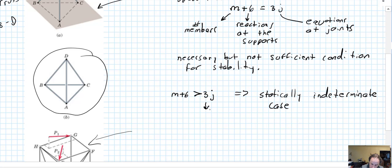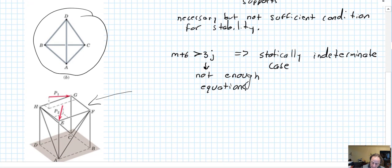Not enough equations to solve for all the unknowns. Alternatively, if m plus 6 is less than 3j, then the truss has too few members, is unstable and subject to collapse.